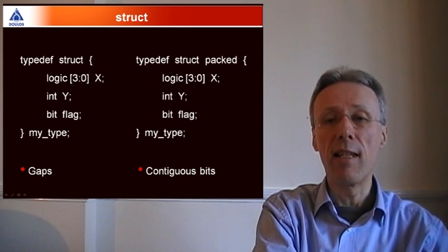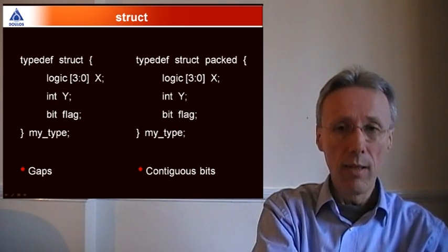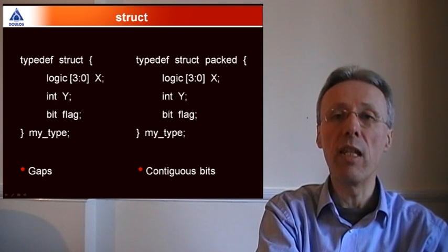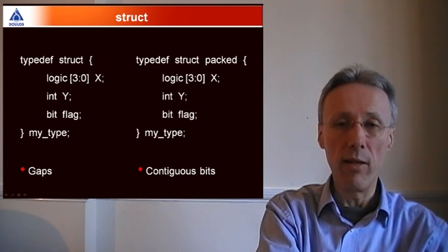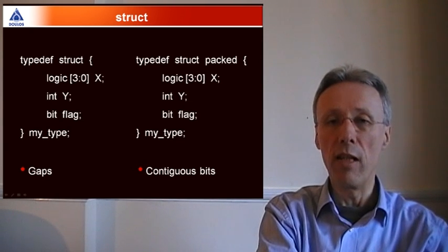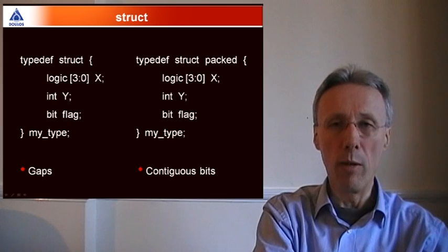On the other hand, if we declare this as a packed struct, then the compiler is obliged to store each bit of the representation in contiguous bits in the implementation. So we're actually going to get eight bits, 32 bits, and one bit for each of these three fields, making 41 bits in total.